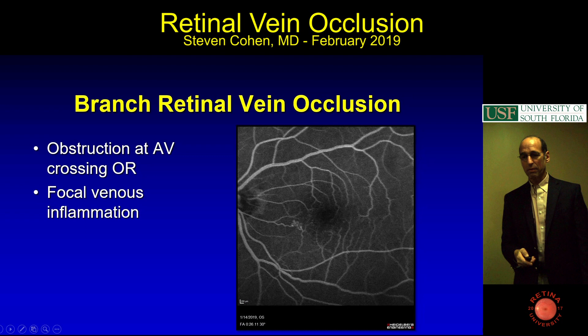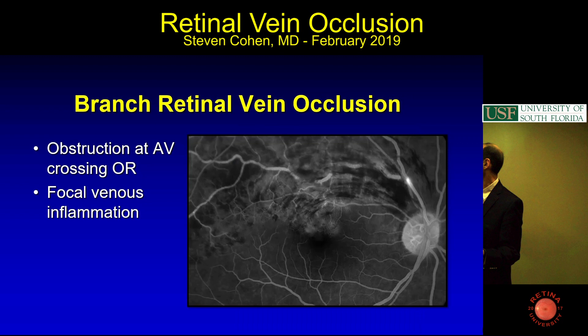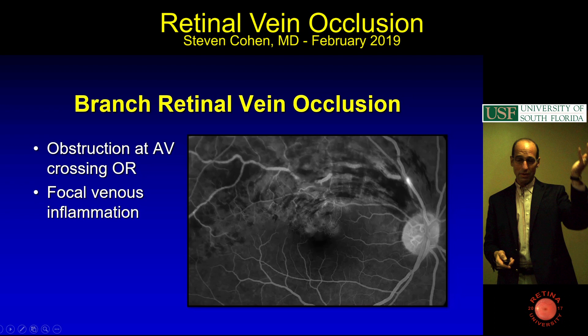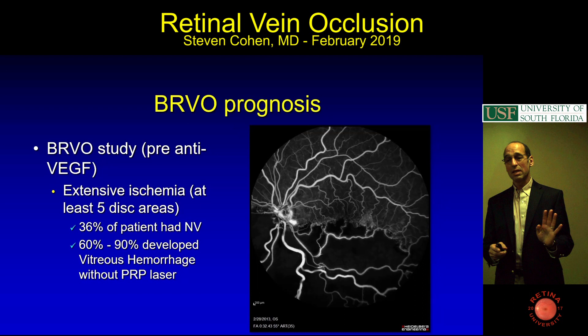Branch vein occlusions occur at AV crossings or possibly from focal venous inflammation. There's some question at meetings: are there inflammatory vein occlusions? When you see a hot spot like that, some people think it might be inflammatory, which could be a slightly different differential, but I don't think that's been run with. The prognosis depends on how much ischemia there is—these numbers are considered important for your testing.